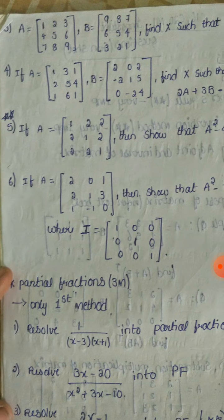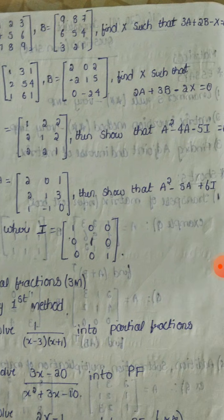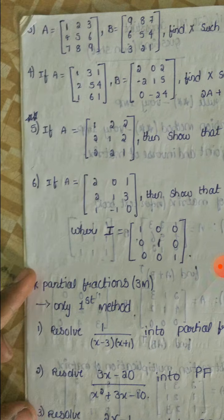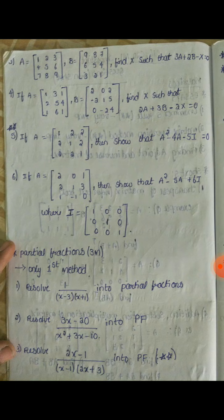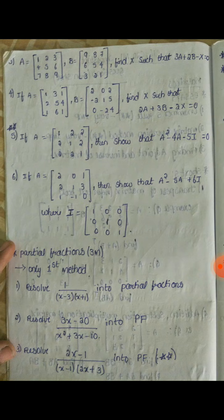Find X such that 3A plus 2B minus X equals zero. Fourth question: if A equals B equals C, find X model type — 2A plus 3B minus 2X. Fifth question: if A equals a given matrix, show that A² minus 4A minus 5I equals zero. Sixth question: same model — A² minus 5A plus 6I, where I is the identity matrix. These are very important short answer matrix models — definitely prepare them.